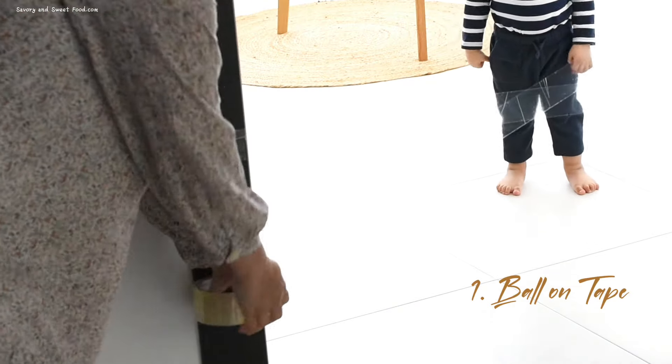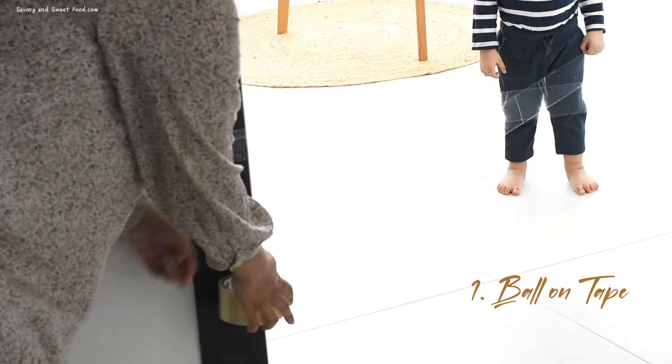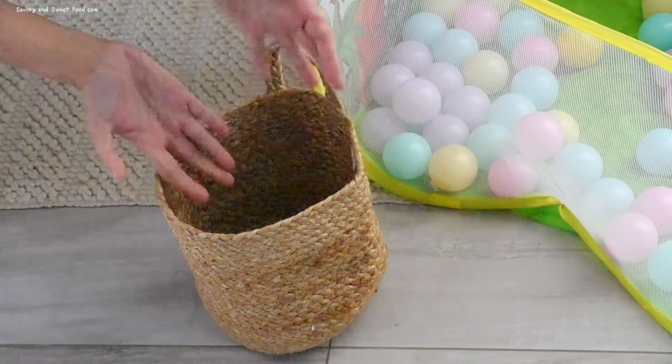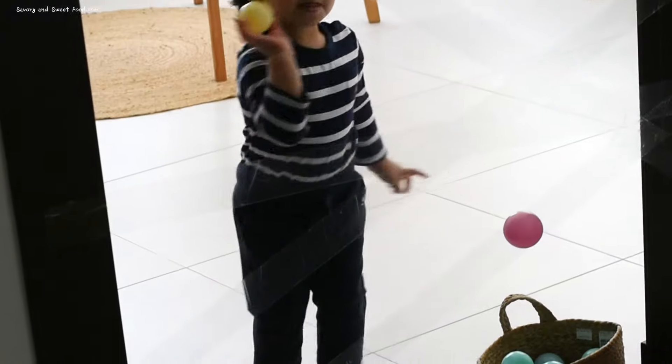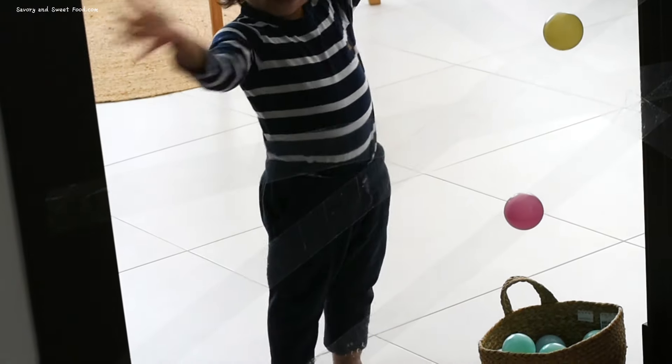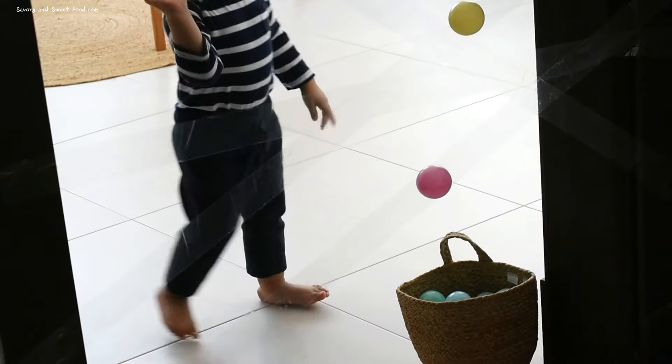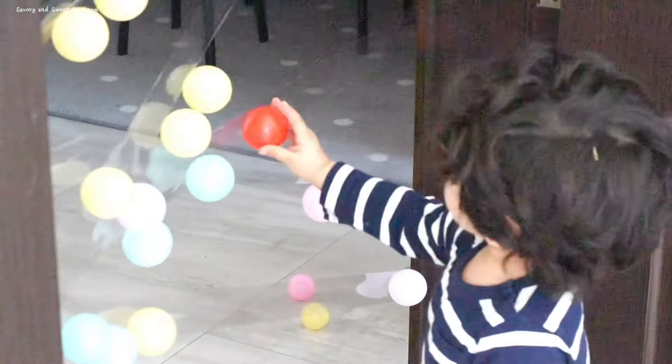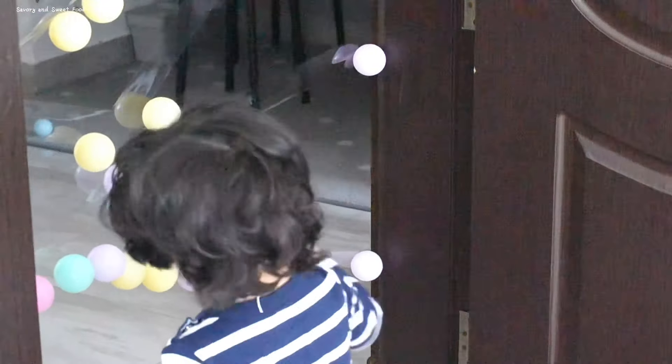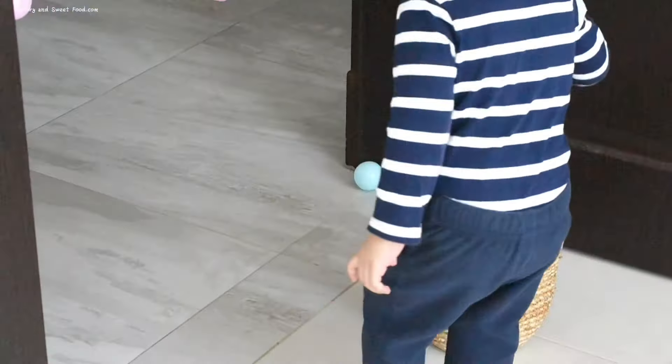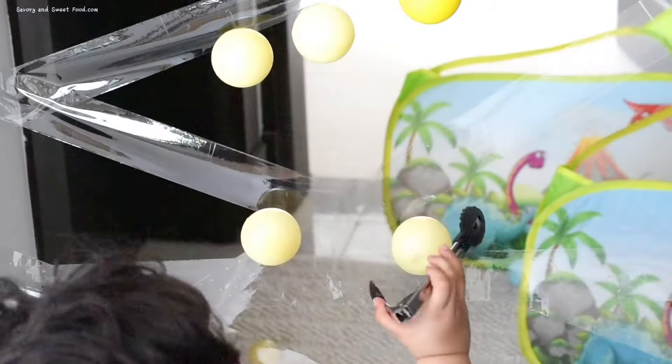Here is a fantastic activity that Omar absolutely loved: the ball on tape game. I taped a zigzag pattern on the door frame and gave Omar a basket of balls. His mission was to throw the balls onto the tape and watch them get trapped like magic. After the fun, we worked on his hand-eye coordination by using kitchen tongs to remove the balls and placing them back in the basket. This is definitely an engaging and skill-building activity for toddlers.